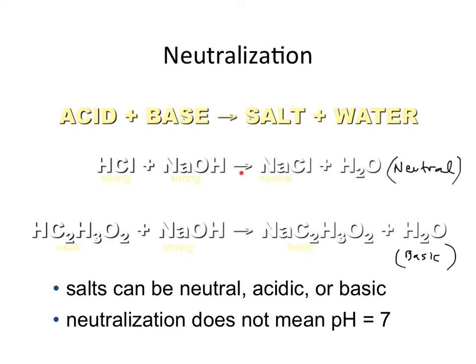If you start with strong/strong, you end up with a neutral solution. Anytime you have a weak/strong titration — whether it's a weak acid or a weak base — that's going to change the pH to something other than 7. So this is just something to consider for now.